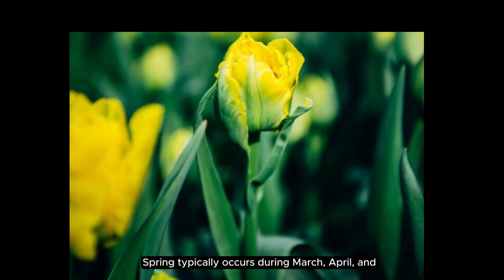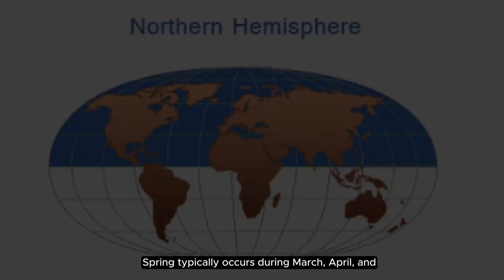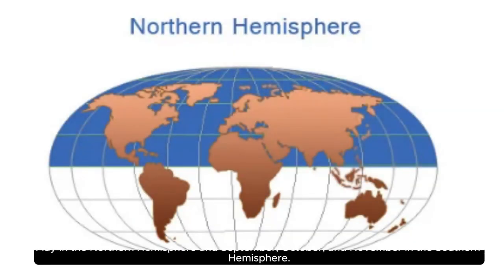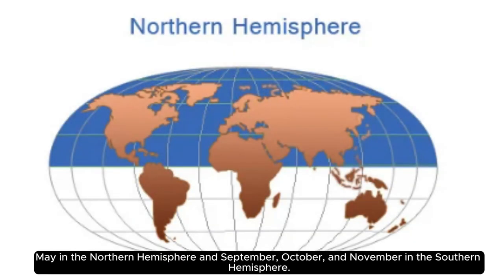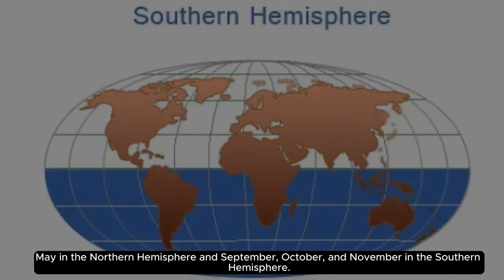Spring typically occurs during March, April, and May in the Northern Hemisphere, and September, October, and November in the Southern Hemisphere.